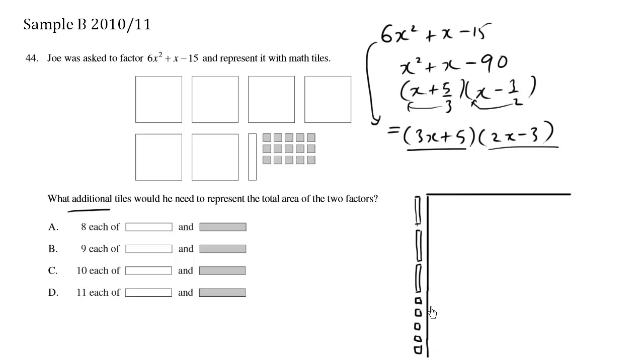This here is 3x plus 5. And we have 2x minus 3. So we have x, x, x is our bars. Negative 3 is going to be shaded. Negative 1, negative 2, negative 3.